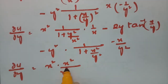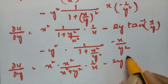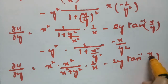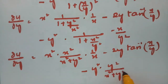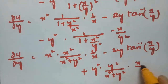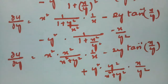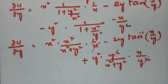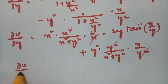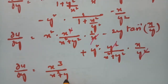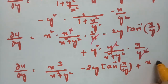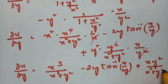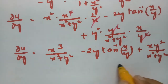Simplifying ∂u/∂y: x square times 1 by 1 plus y square by x square times 1 by x, minus 2y tan inverse of x by y, minus y square times 1 by 1 plus x square by y square times x by y square. After taking LCM and canceling, ∂u/∂y equals x cube by x square plus y square minus 2y tan inverse of x by y plus x·y square by x square plus y square. This is equation B.